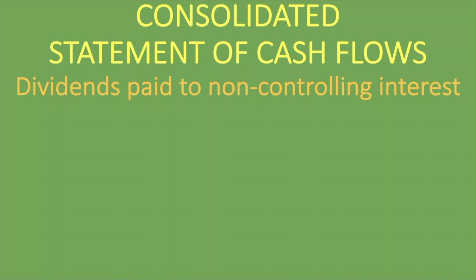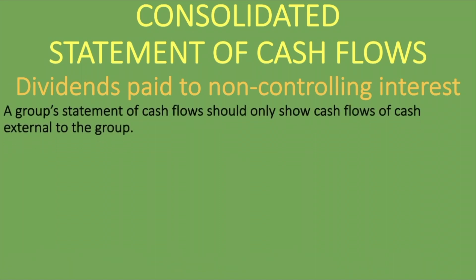You have to remember a group statement of cash flows should only show cash flows external to the group — just like we've done in lessons relating to the consolidated statement of financial position and the consolidated statement of comprehensive income. We are concerned with transactions external to the group, not between the parent and its subsidiaries, because those are internal to the group and are eliminated. If money is being moved from the subsidiary to the parent, that will not appear in the consolidated statement of cash flows.